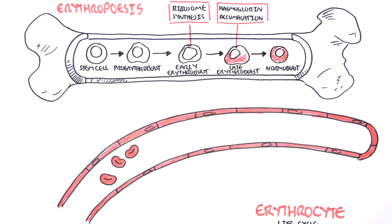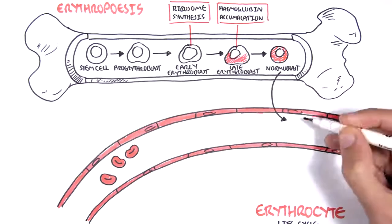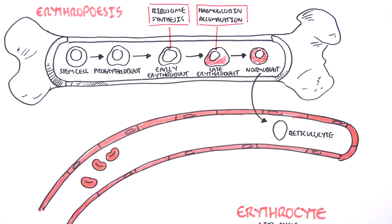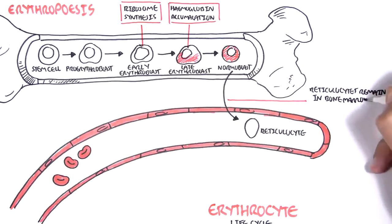A normoblast will then become a reticulocyte. A reticulocyte loses its nucleus. However, it is not a red blood cell just yet.